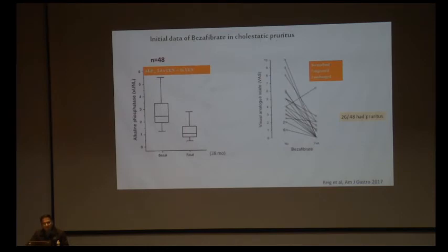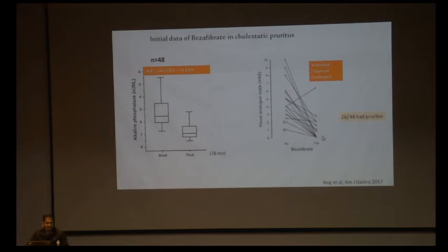The initial Spanish trial using bezafibrate for cholestatic pruritus was published in AMJ 2017. They showed alkaline phosphatase decrease. Of 48 patients, 26 had pruritus; of those, 16 had resolution and 7 had improvement in pruritus. Only 3 remained unchanged. On 48-week follow-up, bezafibrate decreased pruritus symptoms — this was the first paper showing fibrate efficacy on pruritus.